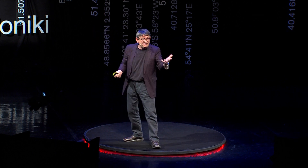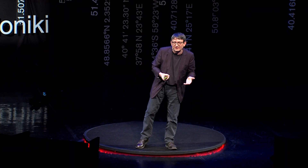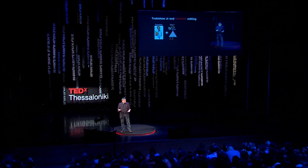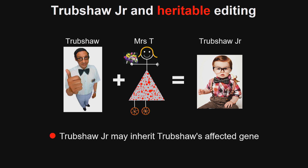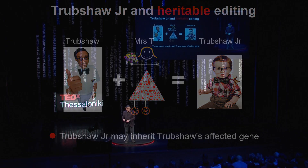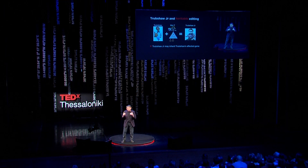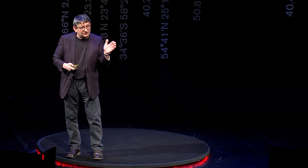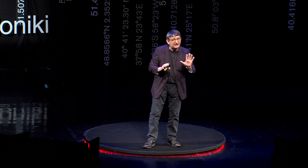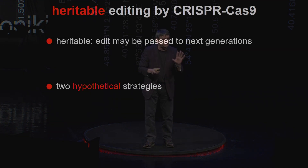He's very rich and finds the love of his life — Mrs. T — and they decide to start a family. The thing about having children, of course, is that Trubshaw's gene predisposing to his neurodegeneration might be inherited by Trubshaw Jr., because we've only fixed Trubshaw's neurons. So what hope might there be for Trubshaw Jr. in the future? This is where we come to heritable human genome editing by CRISPR-Cas9 — making an edit that can be transmitted to future generations. There are two hypothetical strategies in humans; everything from now on is hypothetical, though foreseeable.